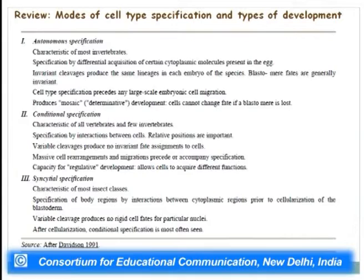Based on this commitment, there are different modes of cell type specification and thereby different types of development. The first is autonomous specification, characteristic of most invertebrates. Specification is by differential acquisition of certain cytoplasmic molecules present in the egg, also called morphogenic determinants. Certain morphogenic determinants are already present in the egg and determine the fate of the cell. Invariant cleavages produce the same lineages in each embryo of the species, and blastomere fates are generally invariant.